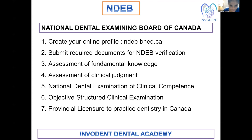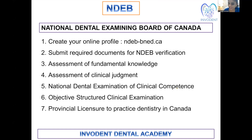When it comes to the National Dental Examination of Clinical Competence, this is an exam where you have to perform your clinical skills. The Objective Structured Clinical Examination is the last exam for you to get your license to practice in Canada. So there are four examinations in total: AFK, ACJ, Clinical Competence, and Objective Structured Clinical Examination. If you qualify in all the exams, you will get the provisional licensure to practice dentistry in Canada.